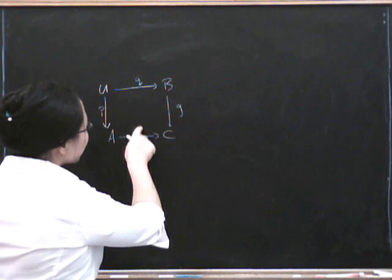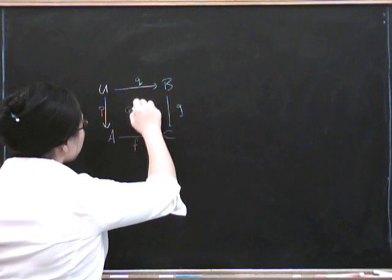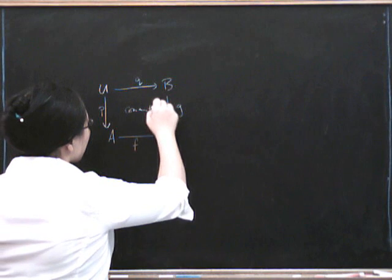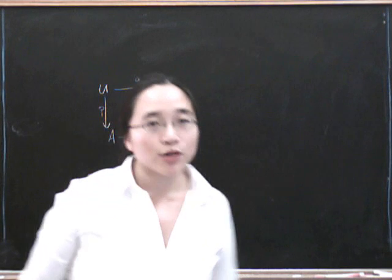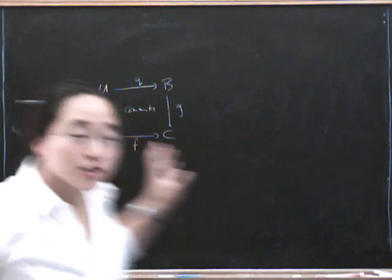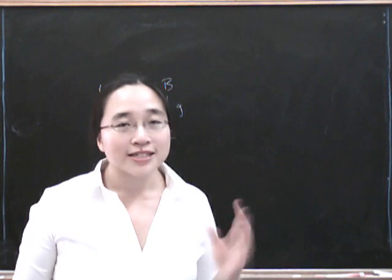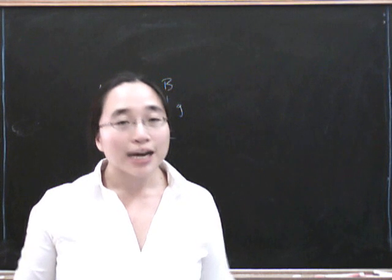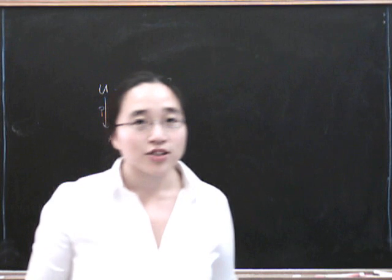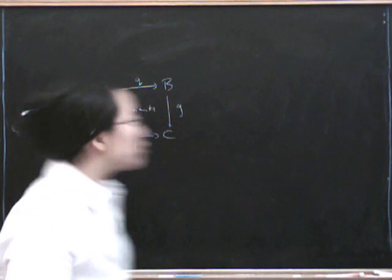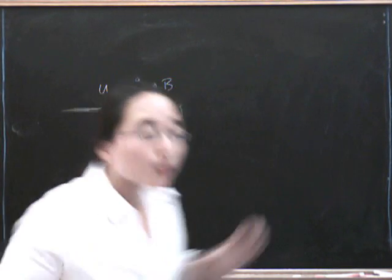Now this diagram has to commute, so this diagram commutes, and it's the best possible one among all such diagrams. So this is going to have a universal property, and as usual the universal property says it's the best one. How do we express that? We say given any other one, there's a unique factorization. So you should be starting to recognize this form of universality now.